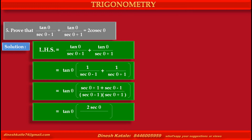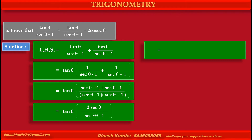At the numerator, sec theta plus sec theta becomes 2 sec theta. At the denominator, sec theta minus 1 into sec theta plus 1 becomes sec squared theta minus 1, which equals tan squared theta. So we have tan theta into 2 sec theta upon tan squared theta.